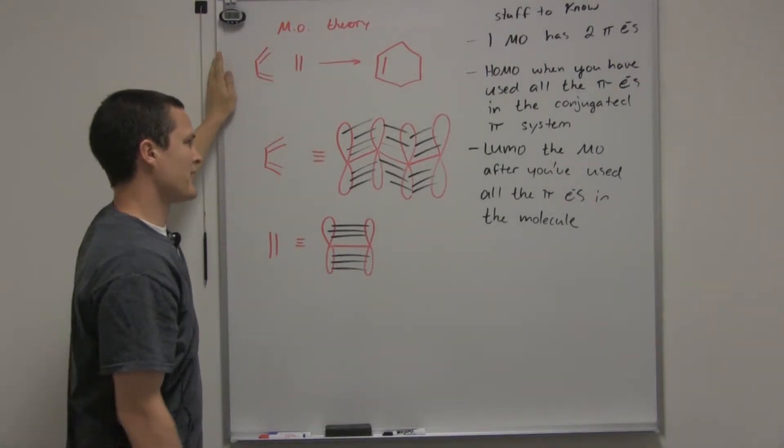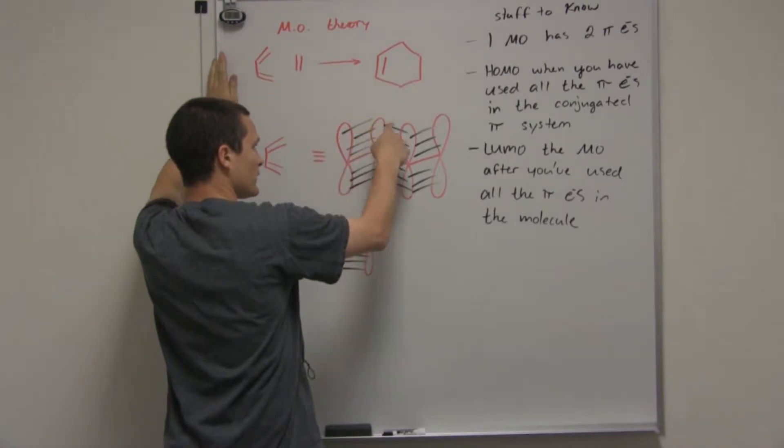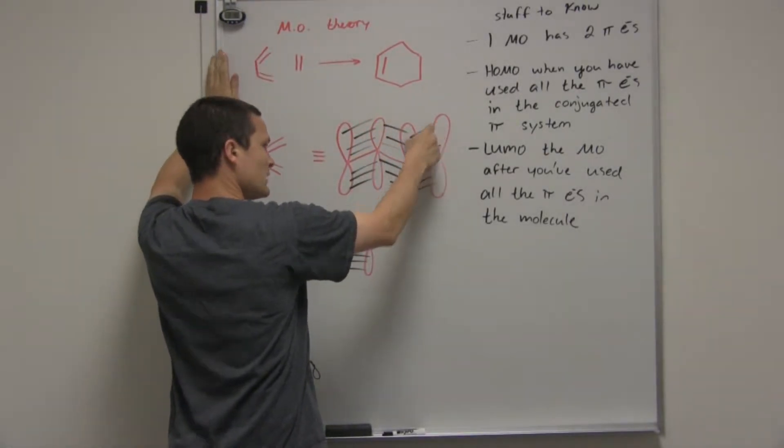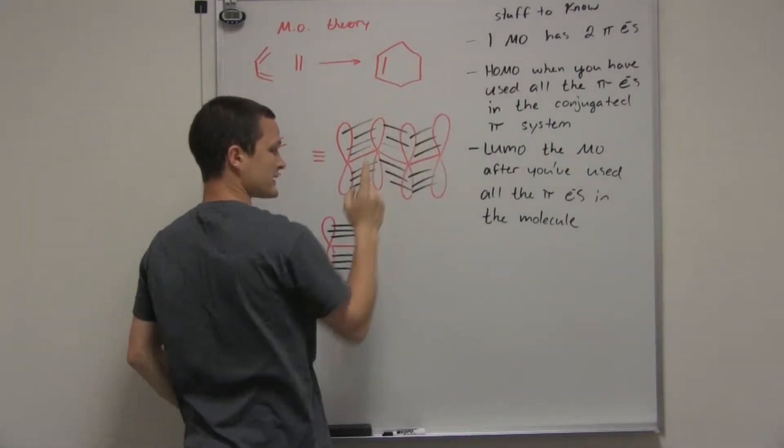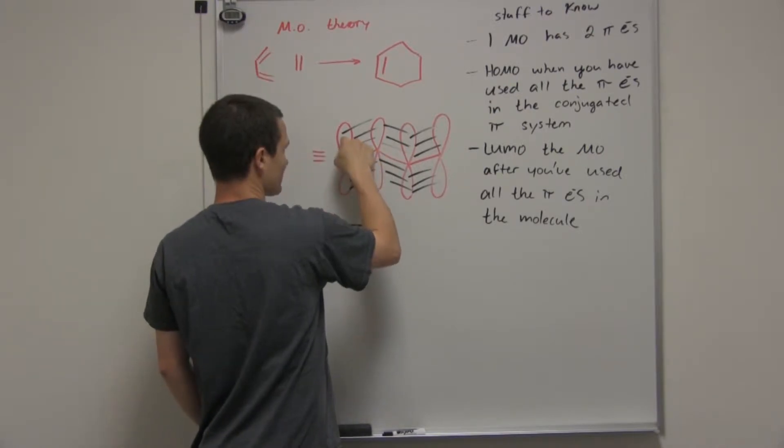For something to be delocalized, doesn't it still have to be inside of an orbital? And if so, does that mean that if an electron can be from here and go through all of the system and end up over here, doesn't that mean that there needs to be a single orbital that connects all of these carbons? And the answer is yes.